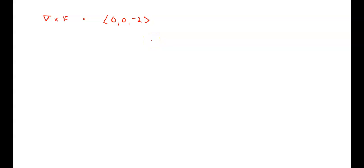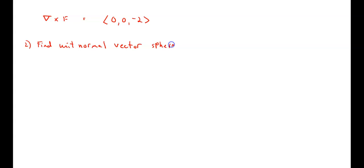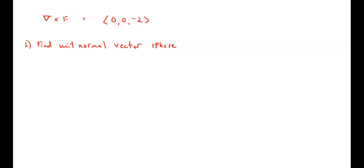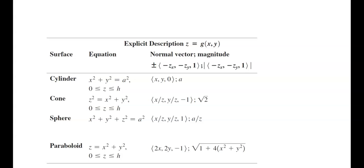The next step requires us to find the unit normal vector for the sphere. The surface given to us is the upper half of the sphere X squared plus Y squared plus Z squared equals 1. In your textbook in section 17.7 there is a chart — and actually this is the exact same chart — that gives you the surface equation, the normal vector, and the magnitude. So if you want the unit normal vector, you take the normal vector and divide it by the magnitude.